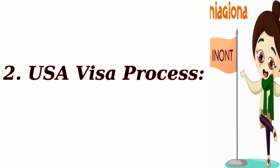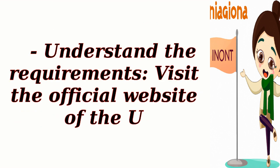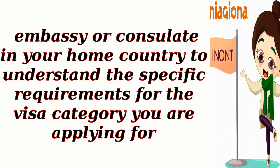USA visa process. Determine the appropriate visa category — research the different visa categories available based on your purpose of travel, such as work, study, tourism, or family visit. Understand the requirements — visit the official website of the U.S. Department of State and consult the U.S. Embassy or consulate in your home country to understand the specific requirements for the visa category you are applying for.